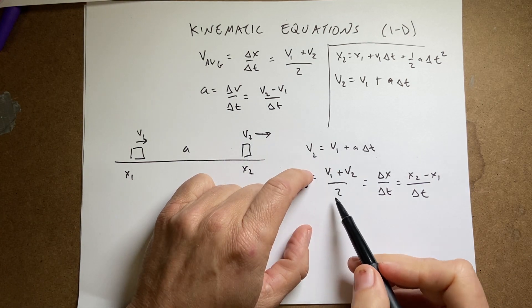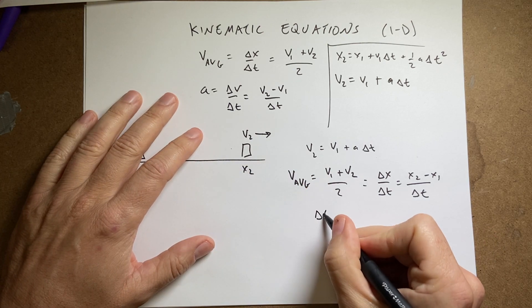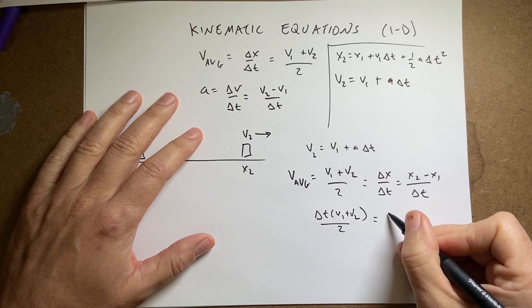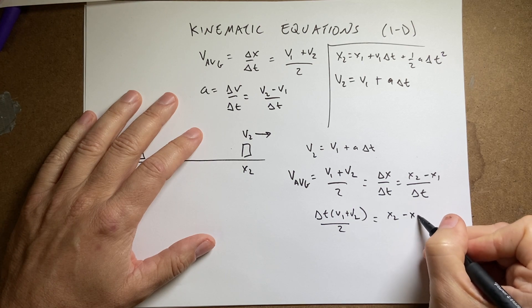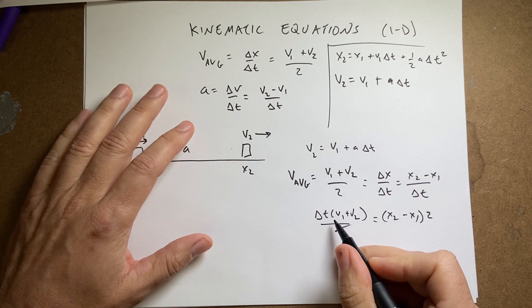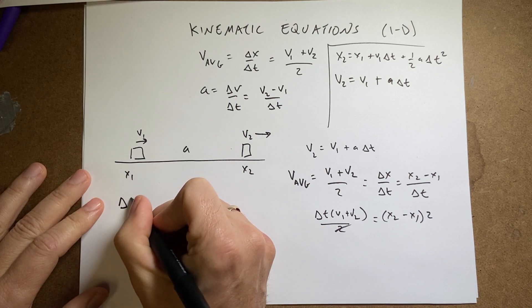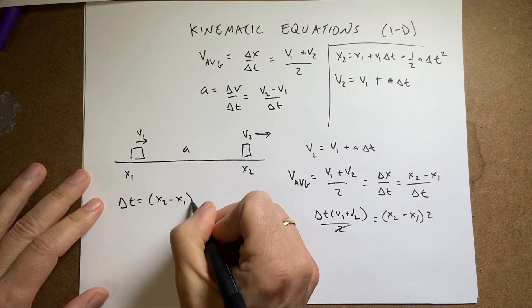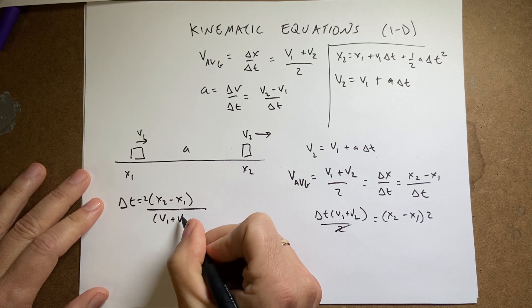So I'm going to take this part and that part. I'm going to multiply both sides by delta t. I get delta t v1 plus v2 over 2 equals x2 minus x1. Now I'm going to multiply both sides by 2. And then I'm going to divide both sides by v1 plus v2. So I get delta t equals x2 minus x1 times 2 over v1 plus v2.